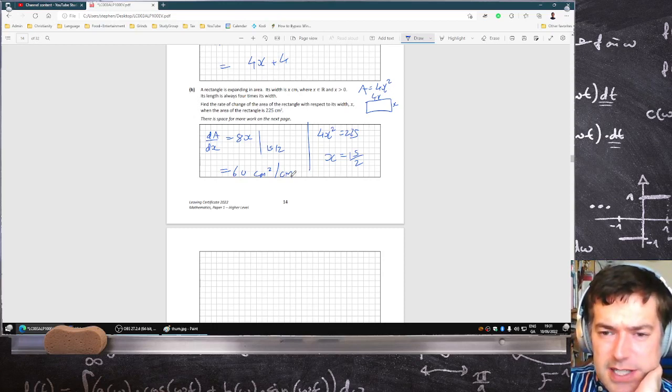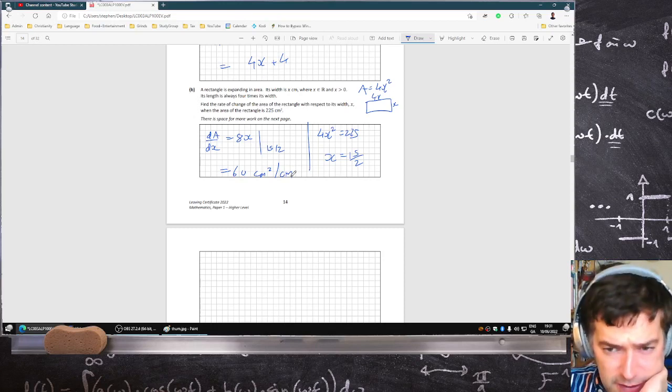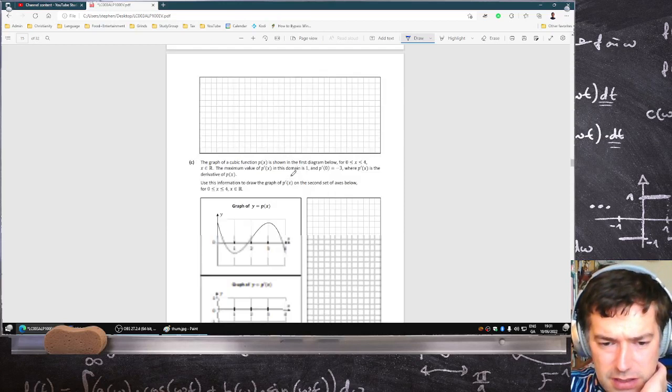A rectangle's expanding area, its width is x, its length is always four times its width. Find the rate of change of the area with respect to x, so that's definitely dA dx, and the A is definitely four x squared, and it's A, yeah, okay, okay.